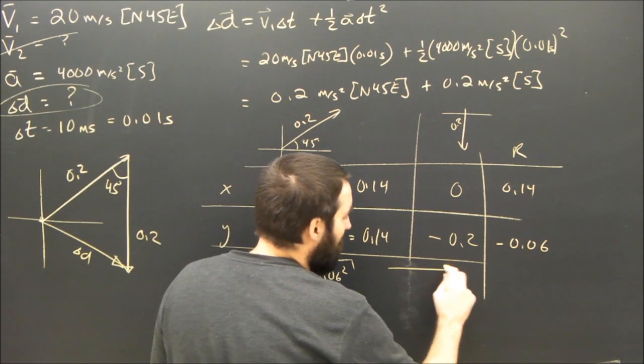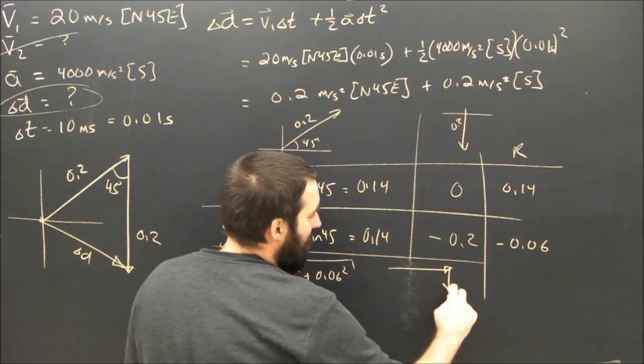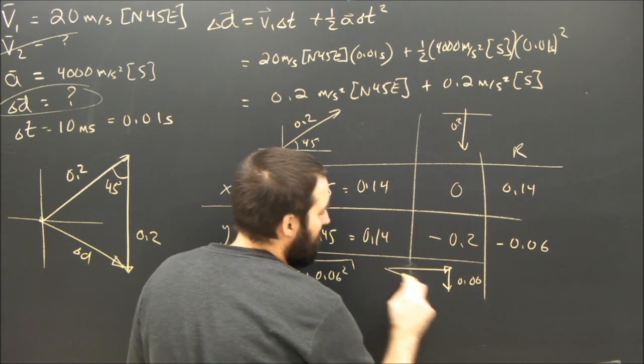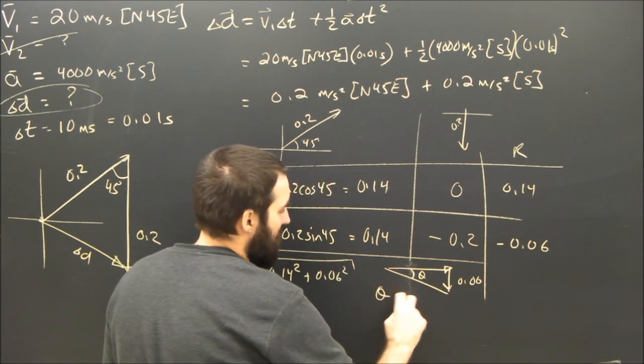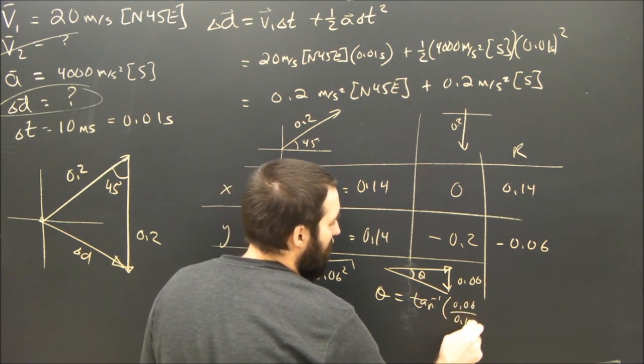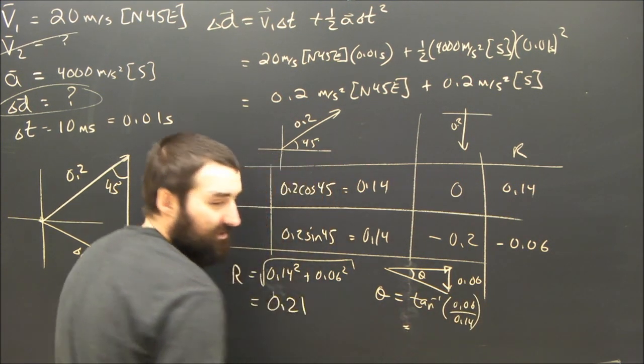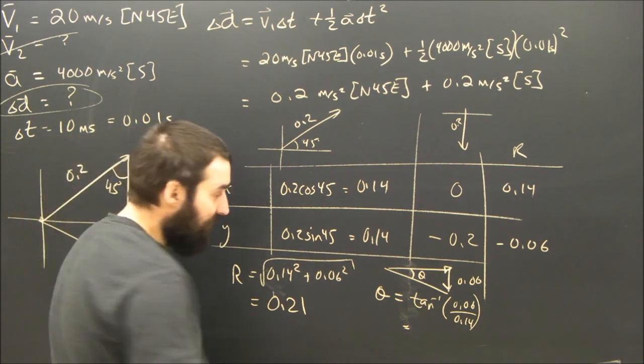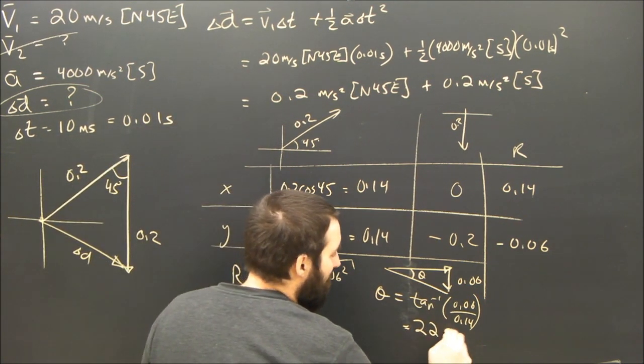Of course, I need the angle too. I've got 0.14 and I've got 0.06. So this angle theta is going to turn out to be the tan inverse of 0.06 over 0.14, which equals 22.5, if I'm not mistaken, 22.5 degrees.